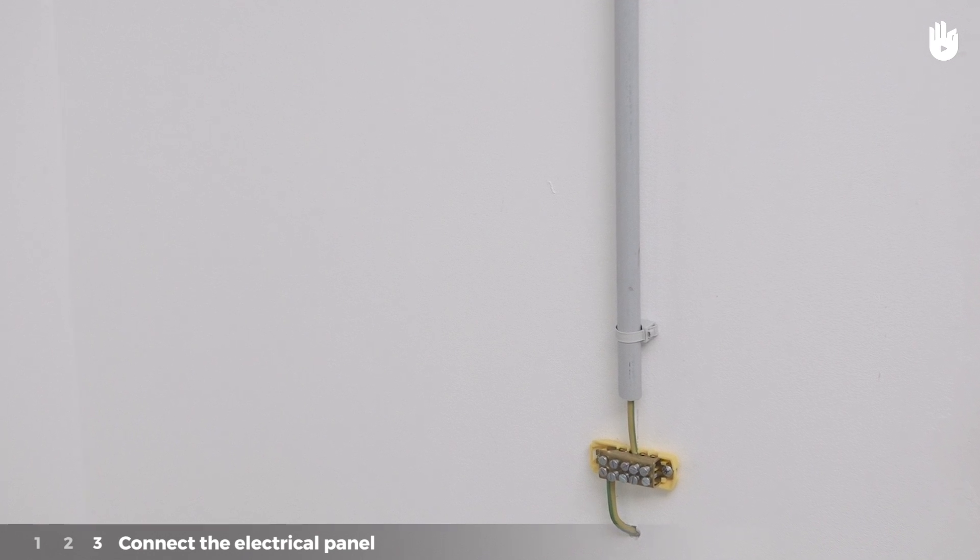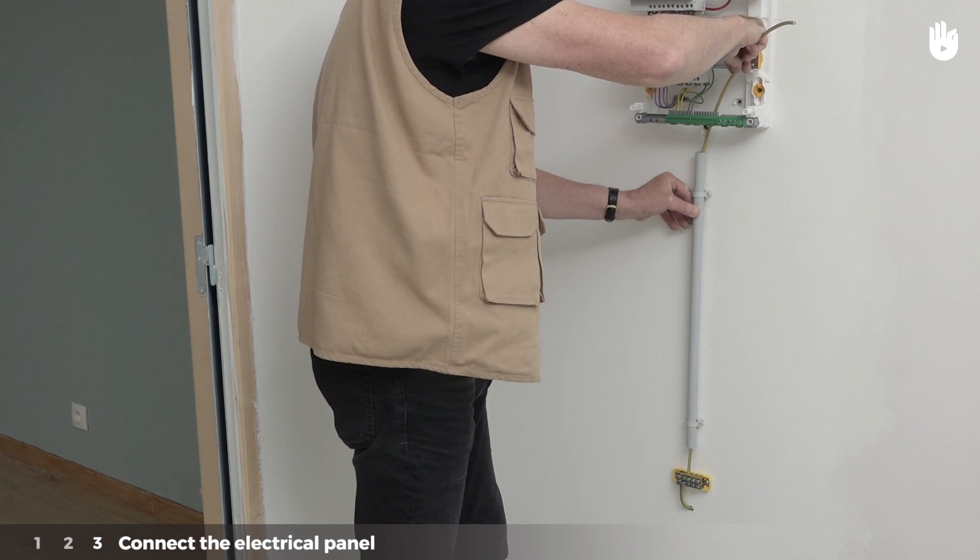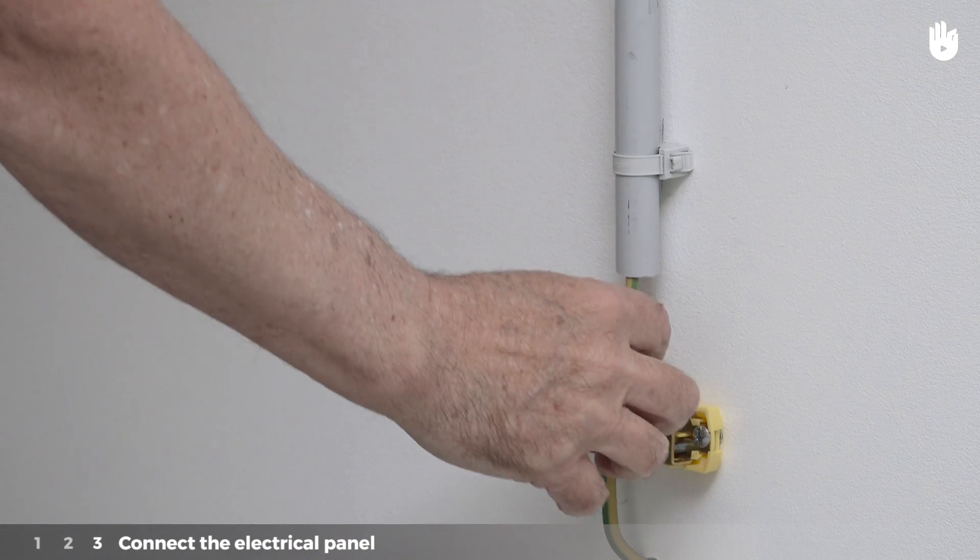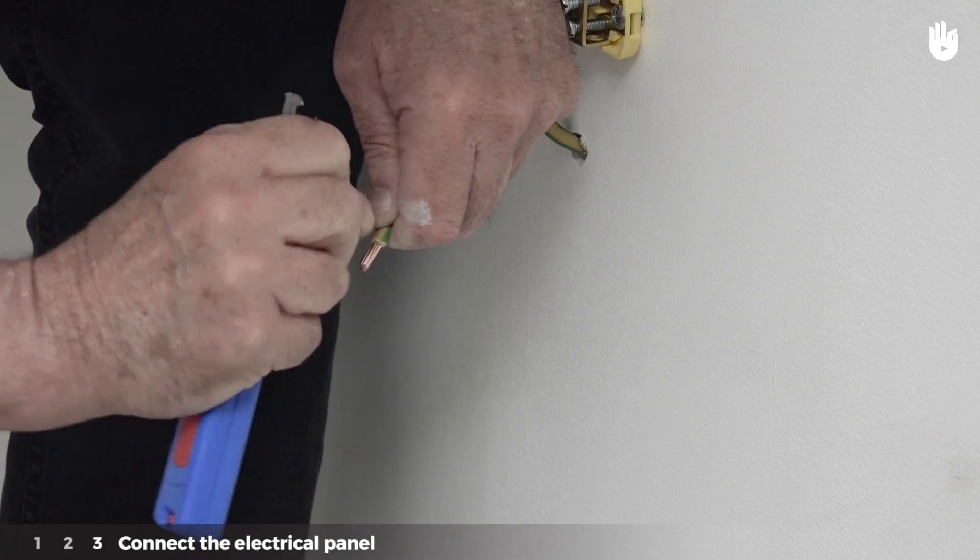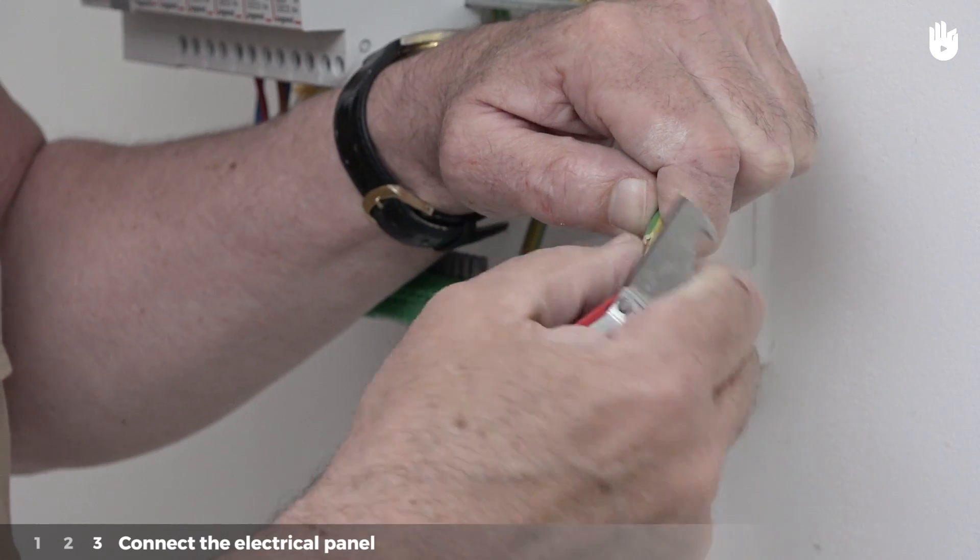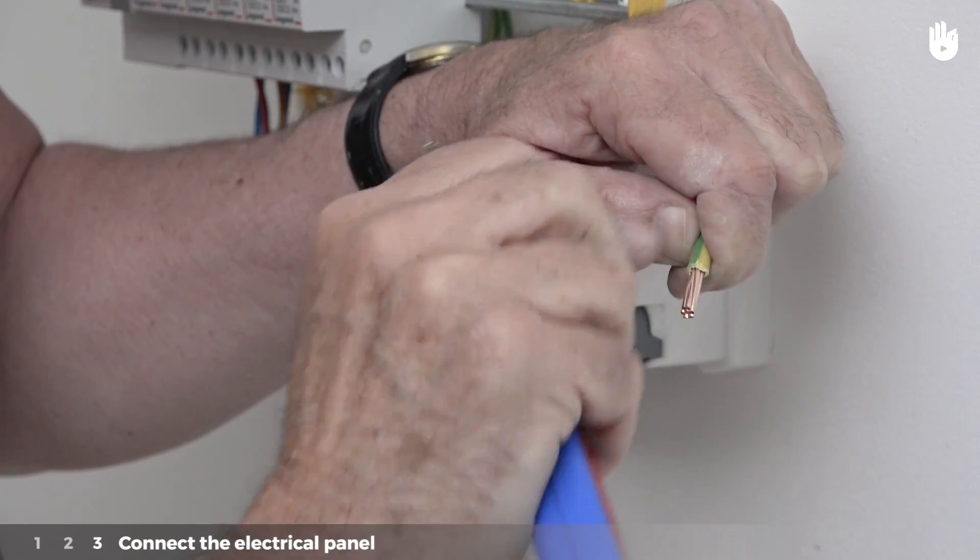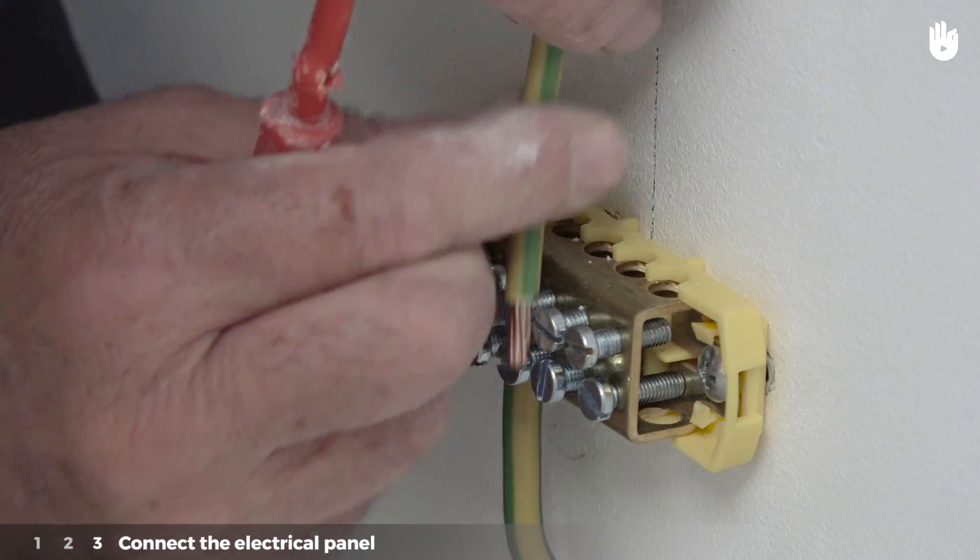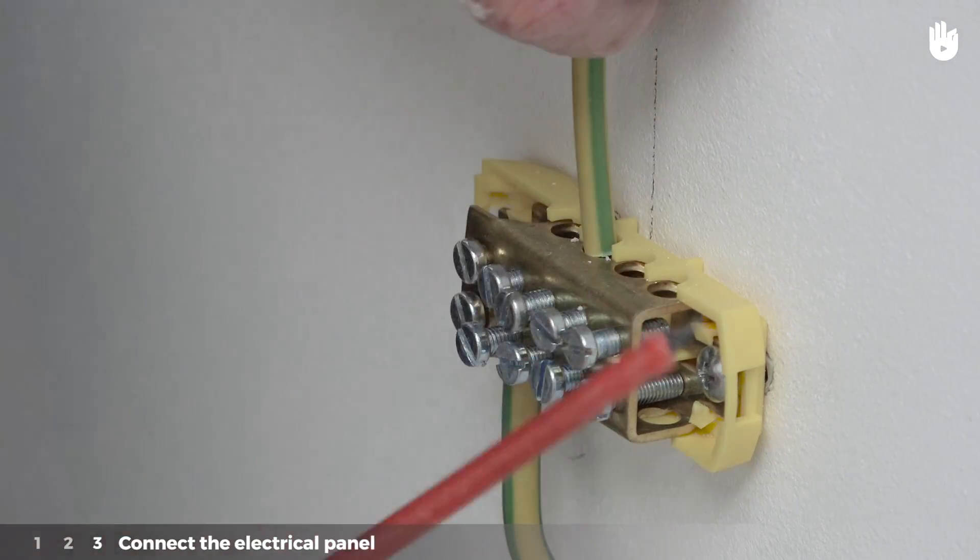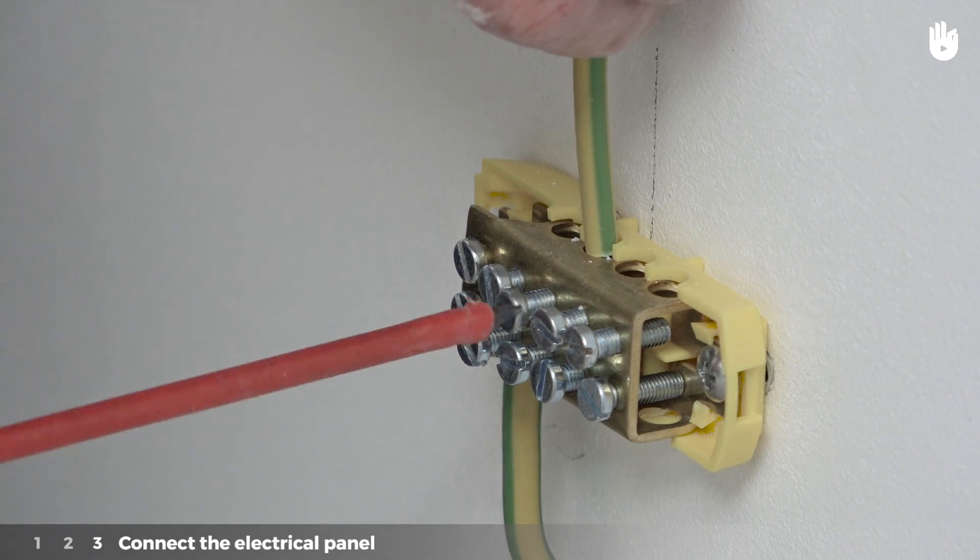Step 3: Connect the electrical panel. Put the main protection conductor into the tube. Strip both ends of the conductor. Connect the main ground terminal. Insert the wire into one of the terminals and screw it in.